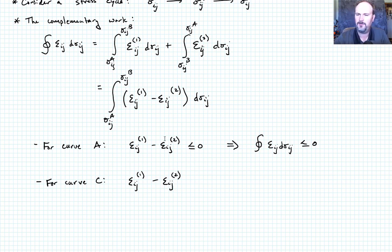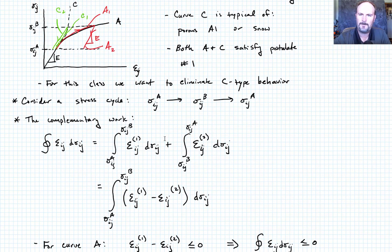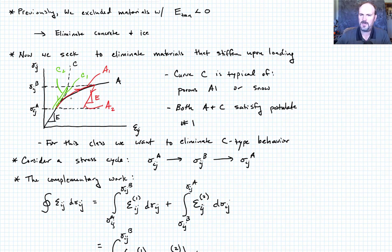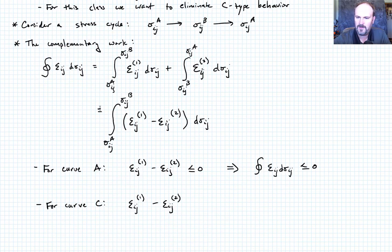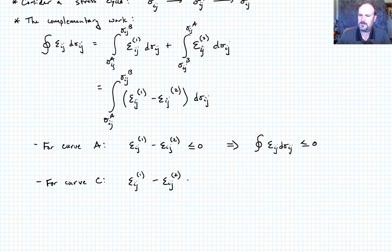Now let's go do the same thing for curve C. So for curve C it's the opposite effect. The unload C2 curve is actually going to show a smaller strain than the loading curve and so that sign flips. So this now becomes greater than or equal to zero. And so we have a distinguishing feature that delineates these materials.